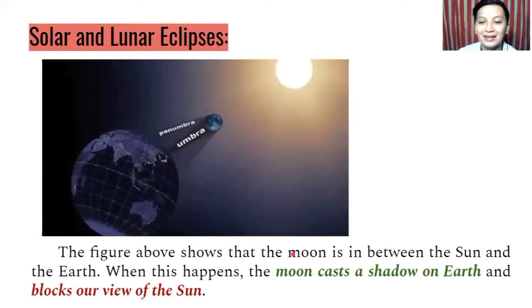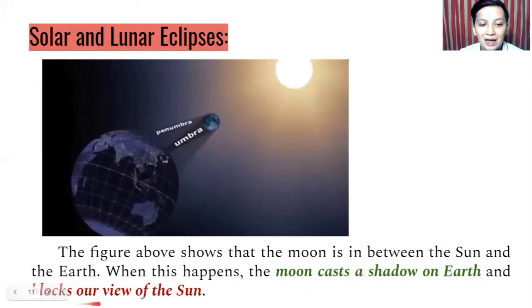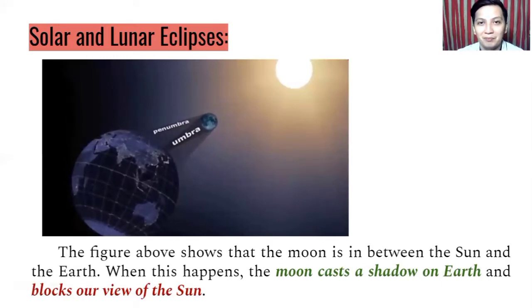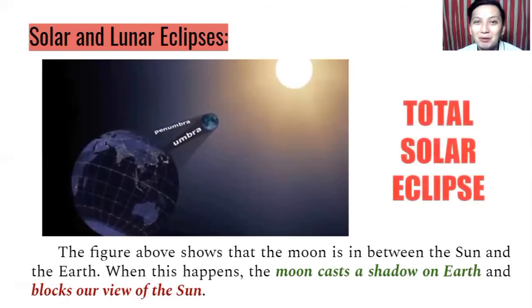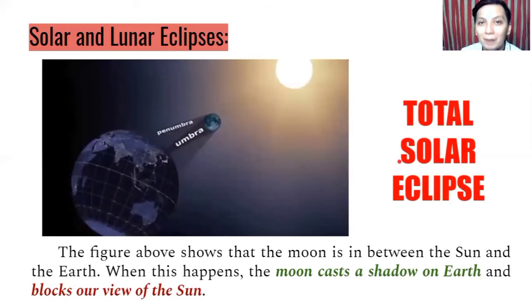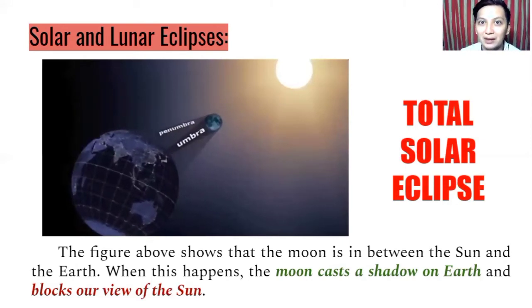This eclipse is what we know as the total solar eclipse, meaning the moon entirely blocks the sun. That's solar eclipse — because the moon blacks the entire part of the sun, we can only see the shadow of the moon reflected on the Earth.